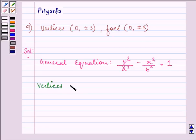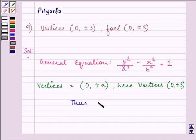Vertices are given as (0, ±a), and here we are given the vertices as (0, ±3). Thus, we have the value of a as 3.